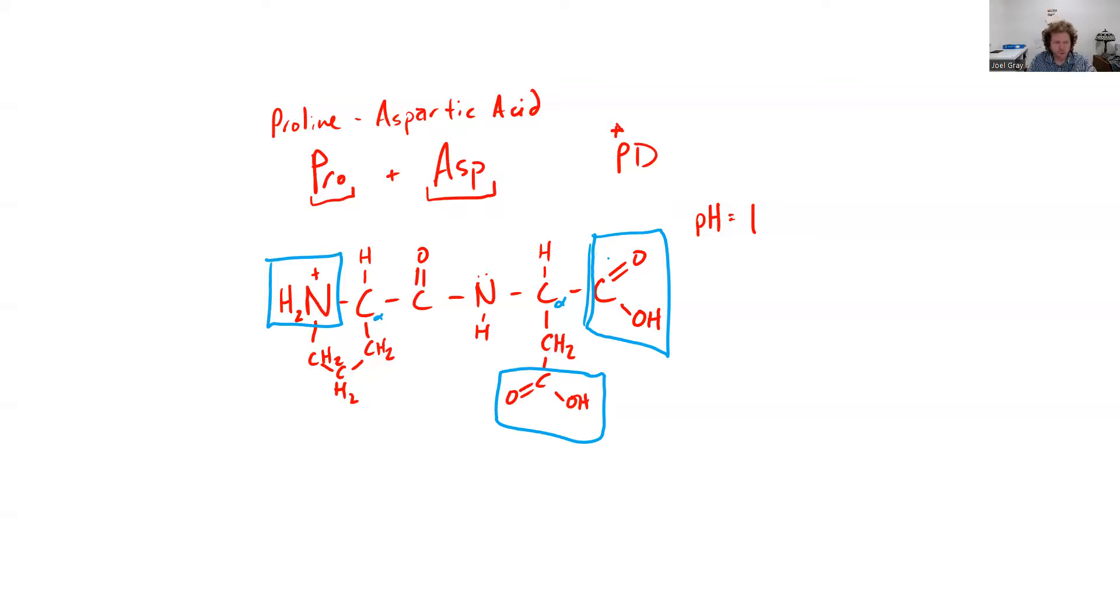My ionizable groups, those pKa values will be: for my C-terminal, that's going to be about 2.1. My R-group for my aspartic acid is going to have a pKa of approximately 3.4. My N-terminal for proline is going to be about 8.9.